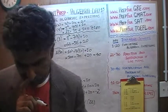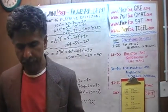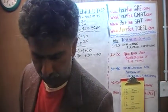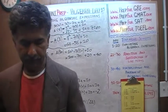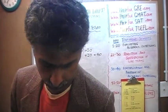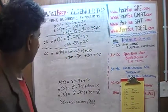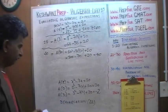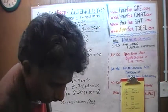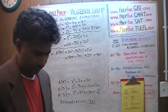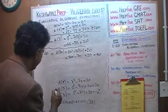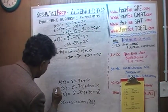We were asked to find the value of the expression when x equals 0, 3, 5, 8, and 10, and we have done so. We found five things. I'm going to put a box around those five results. We were asked to find A(0).